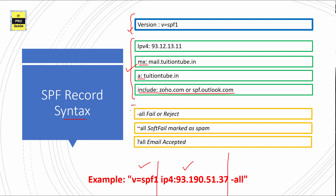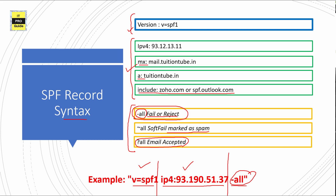In the third portion, you specify what action needs to be taken. If the version is spf1 and the receiver server finds the IP address is not matching with the SPF record, you have three options: reject the email, accept it and mark it as spam, or accept regardless of the SPF record. Here I put '-all', which means reject all emails from servers except the IP address I mentioned.